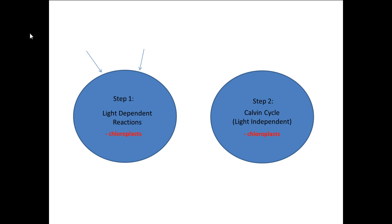For the light-dependent reactions we have two inputs: light and water. We have three outputs: oxygen, NADPH (one of our energy carrier molecules), and a little bit of ATP. The oxygen is going to leave as a waste product, and the NADPH and ATP are going to be used in step two.